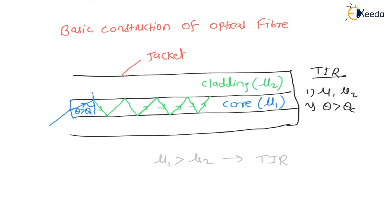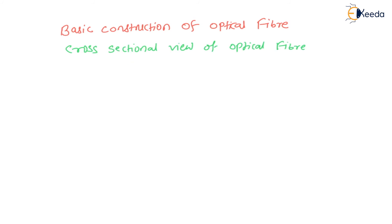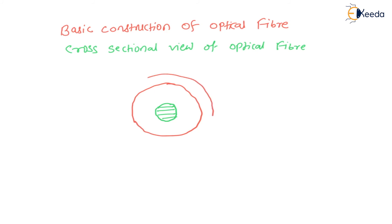This is the basic construction and basic working of optical fiber. Now we will see the cross-sectional view. In the cross-sectional view, the central inner part — the core — appears as a circle. Then the outer part, the cladding, appears as another concentric circle around it. So this will be the cladding.